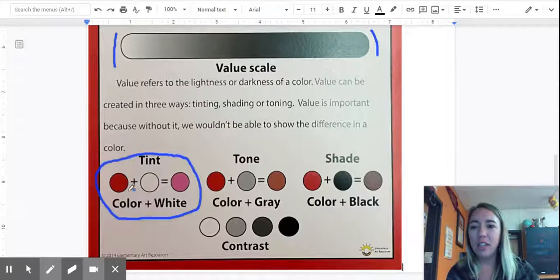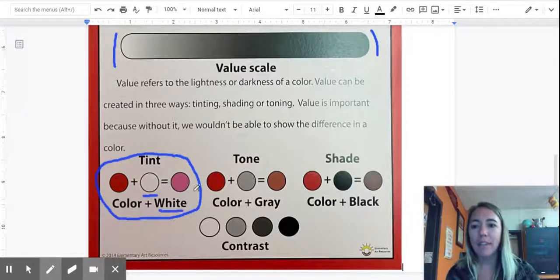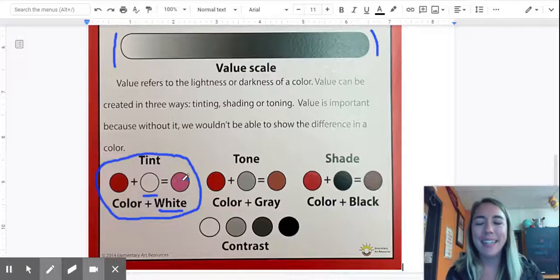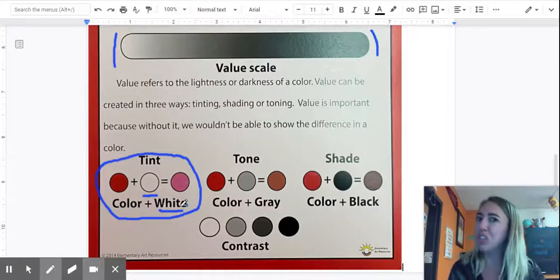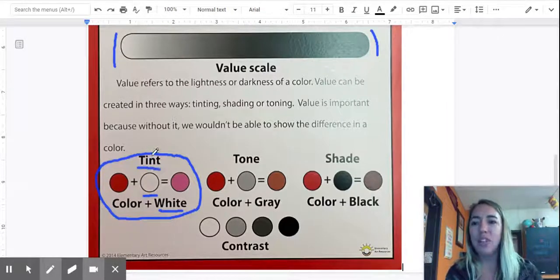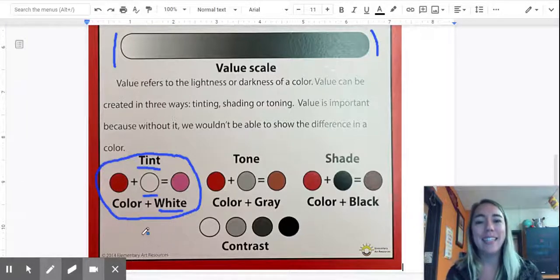So the hue I chose is red. I added white. And that created a lighter value of red, which is pink. Pink is actually just a light value of red. Did you know that? Well, now you do. So if I add white to a hue or a color, I create a tint.